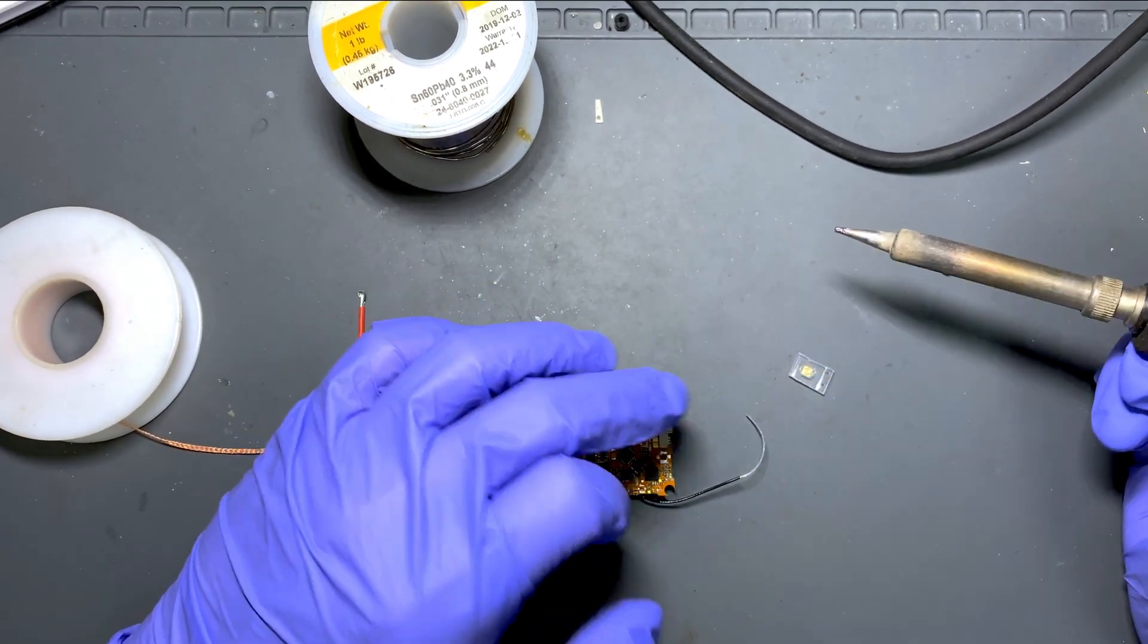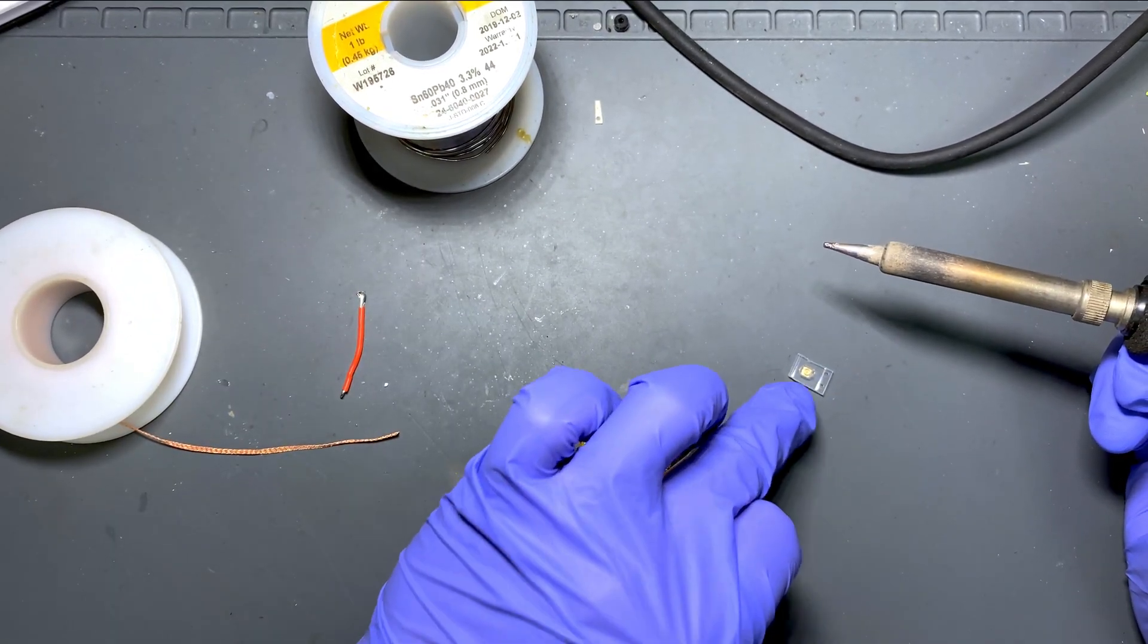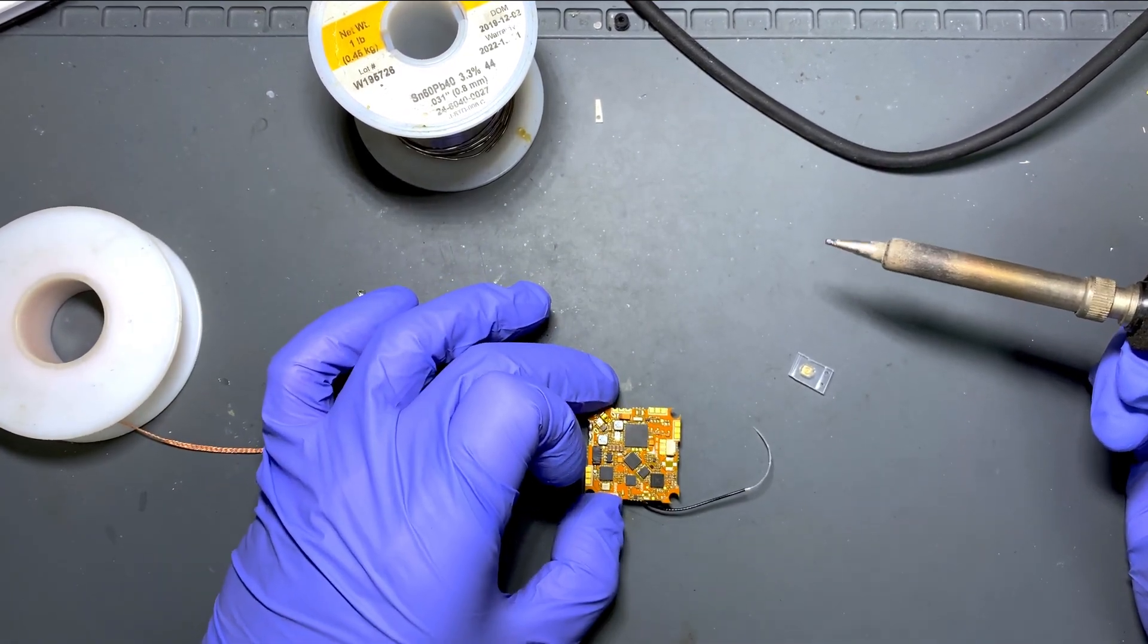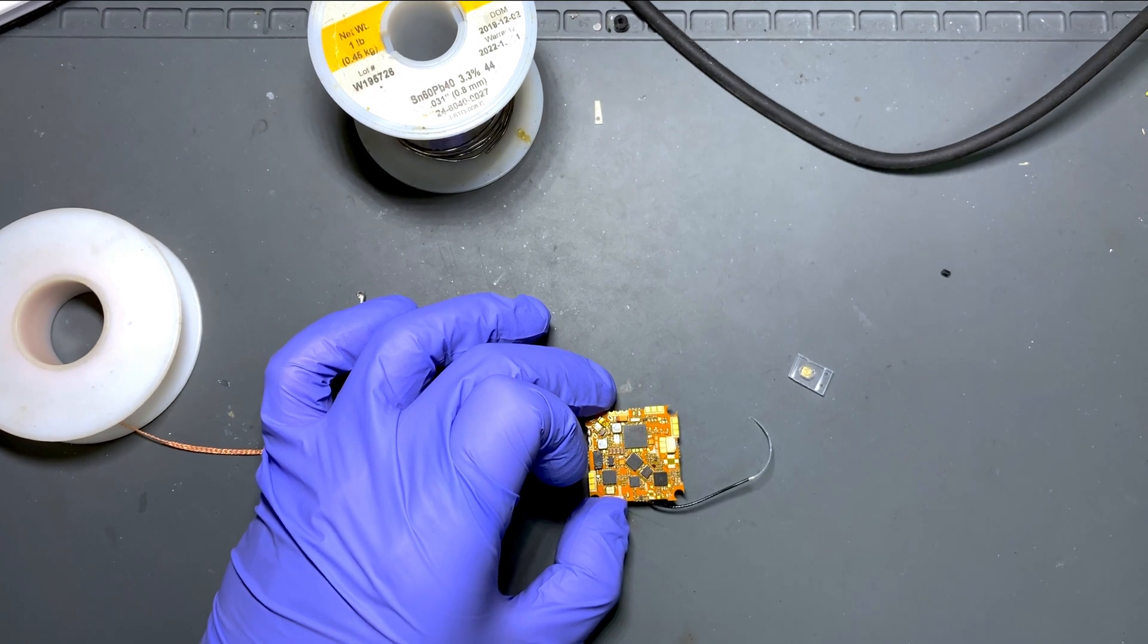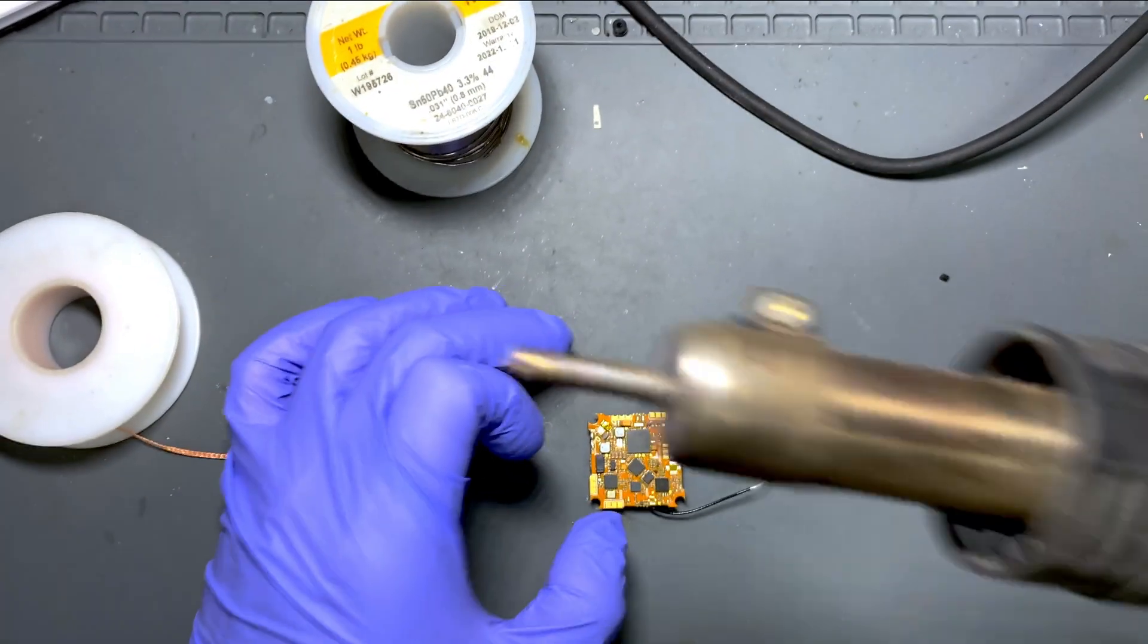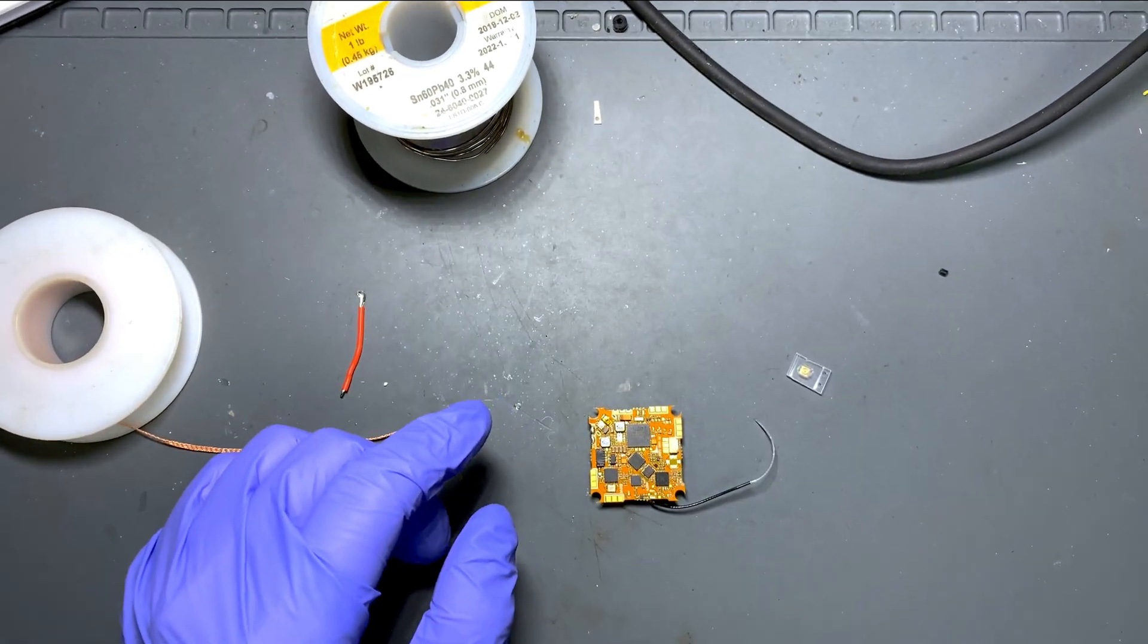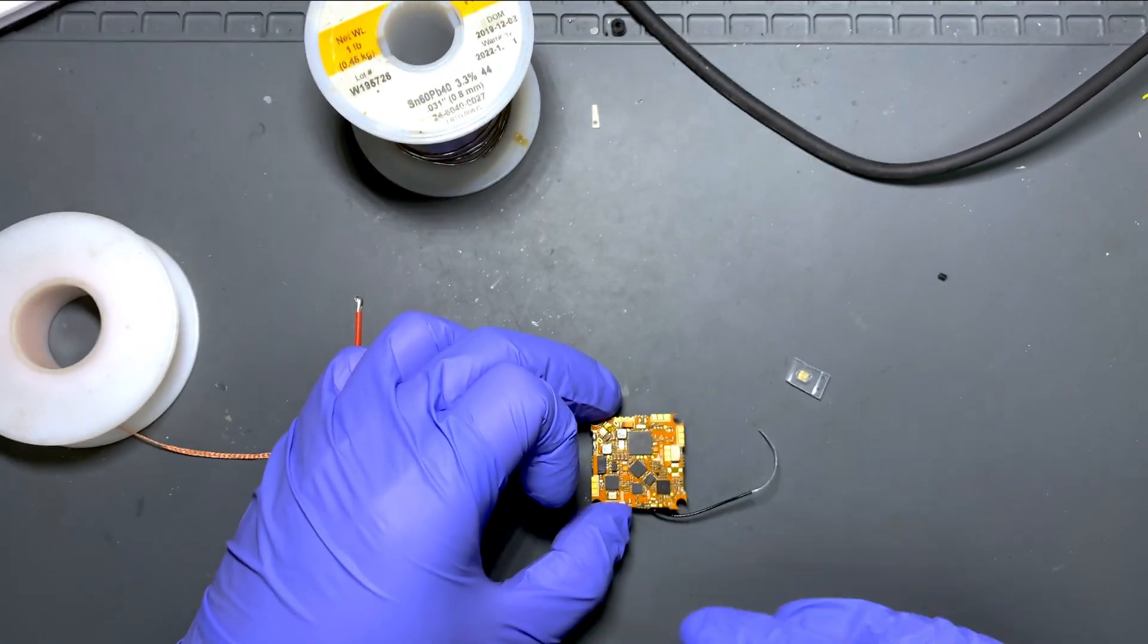When you're doing the soldering for the connector here, you want it to be as flat as possible because you don't have a hot air gun like this. This is good for chip soldering. If you don't have this then you want to keep the surface as flat as possible.